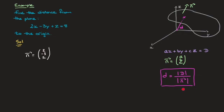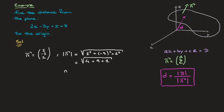Next, looking at the formula I have here, I need to calculate the magnitude of that normal vector n. The magnitude of vector n is equal to the square root of 2 squared plus negative 3 squared plus 1 squared. That's equal to the square root of 4 plus 9 plus 1. In other words, the magnitude of the normal vector n is equal to the square root of 14.